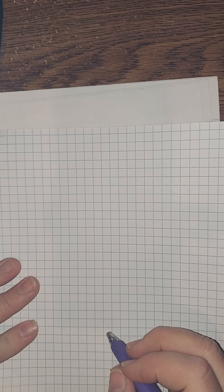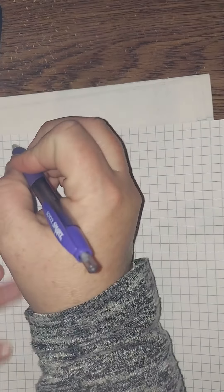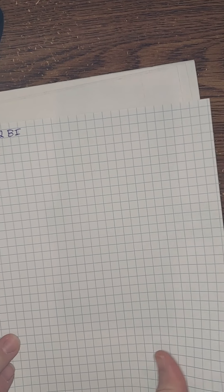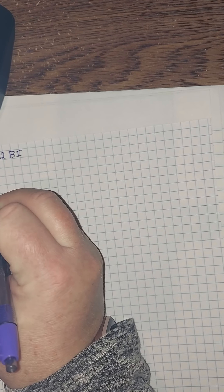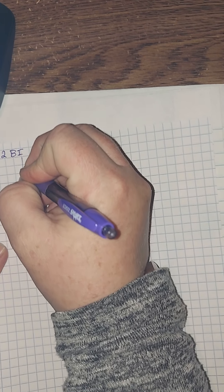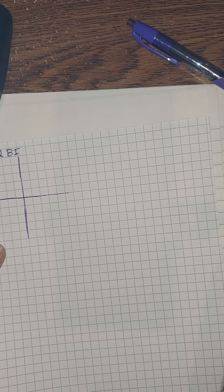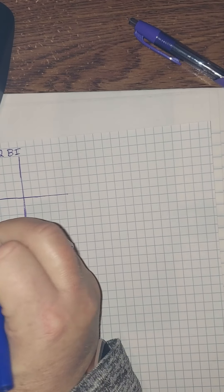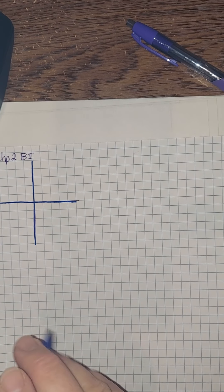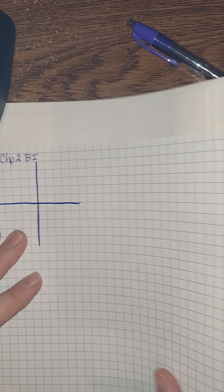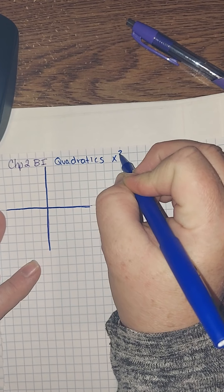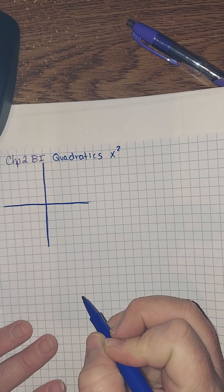Okay friends, so this is the beginning of Big Ideas Chapter 2. It's going to be important for you to have some graph paper or some way to do graphs. So our biggest thing is that this chapter is all about quadratics — quadratics means x to the second power. We're going to be dealing with parabolas.